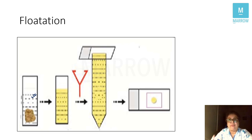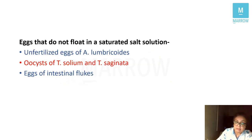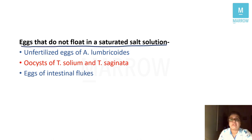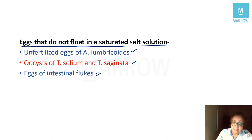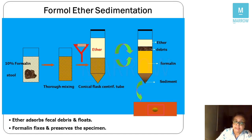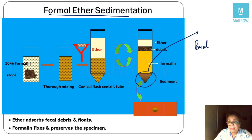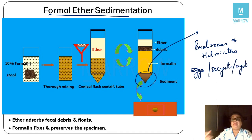Eggs that do not float in a saturated salt solution include the unfertilized eggs of Ascaris, the oocysts of Taenia solium and saginata, and the eggs of intestinal flukes like Fasciolopsis buski. In sedimentation technique, a chemical of lower specific gravity is used. The advantage is that both protozoans as well as helminth eggs, oocysts, and cysts will be concentrated at the bottom of the tube.